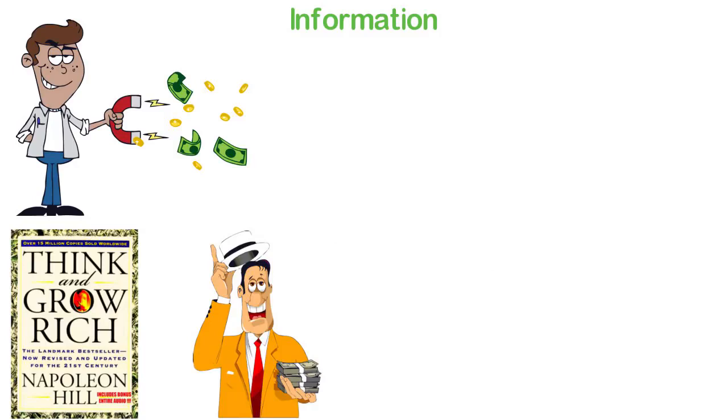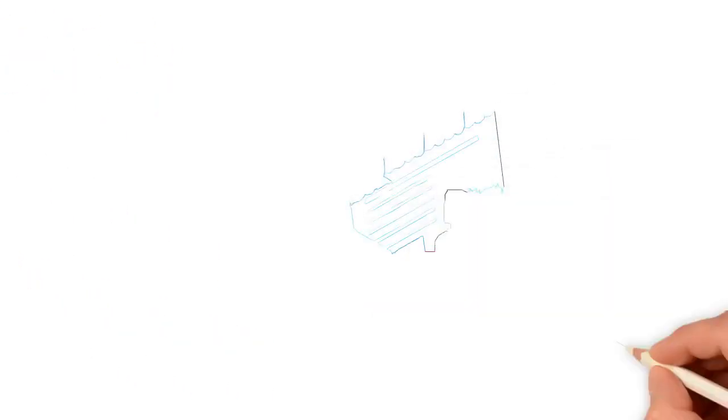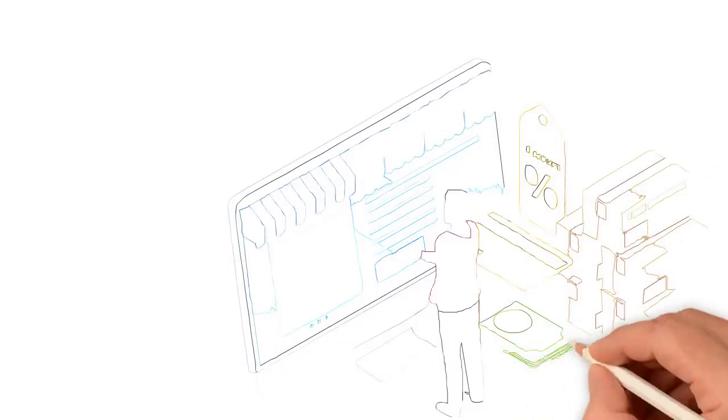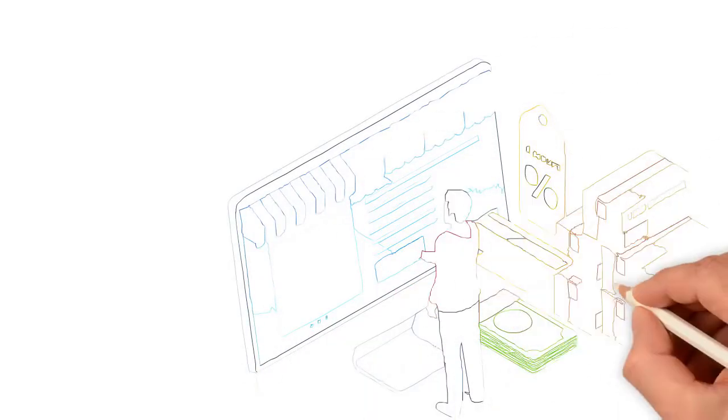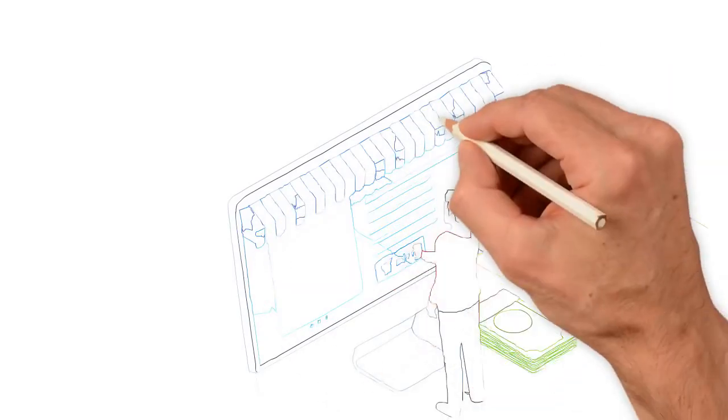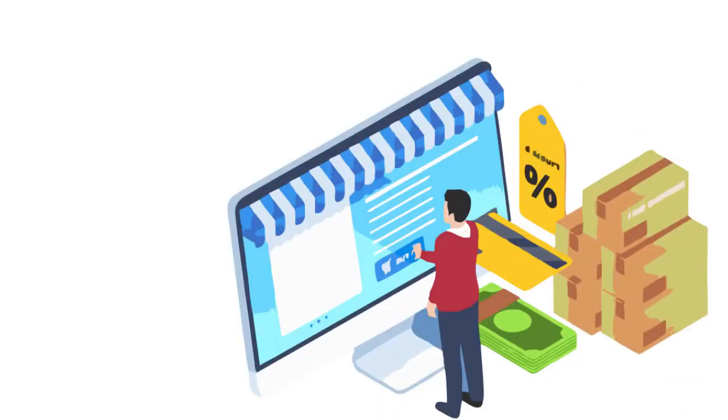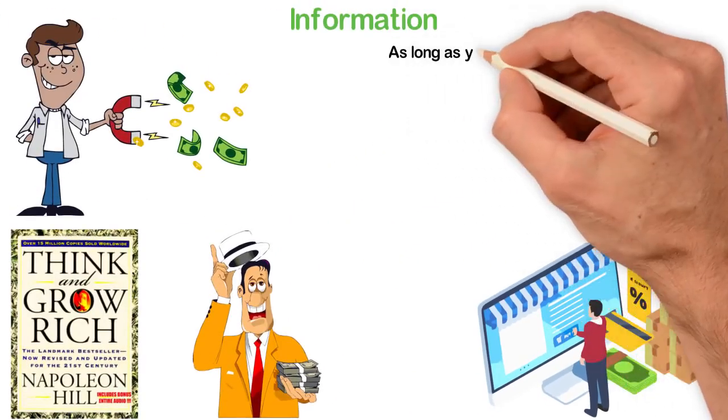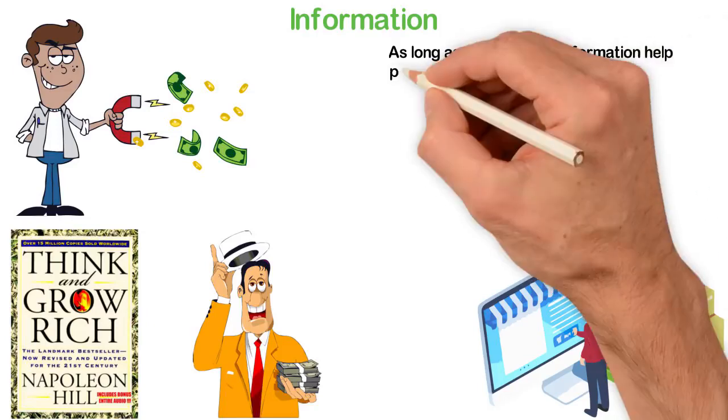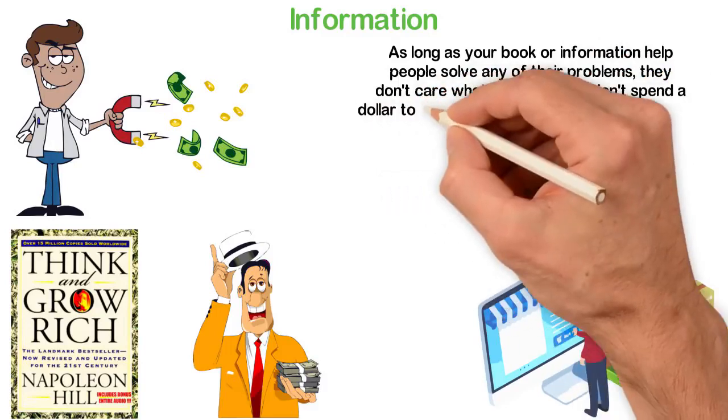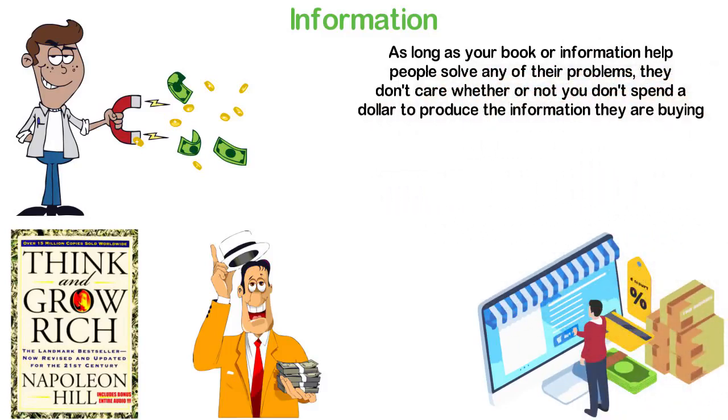This example even becomes crazily better with the internet. For example, I have more than five books I've written and am selling as you watch this video. Of all these five books, I only published one as a hard copy. In fact, I later discovered that people are willing to pay more for the soft copy of my books than for the hard copy. As long as your book or information helps people solve any of their problems, they don't care whether or not you spent a dollar to produce the information they are buying.